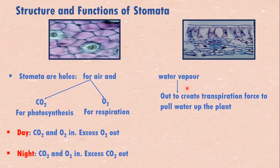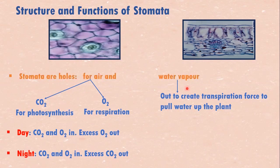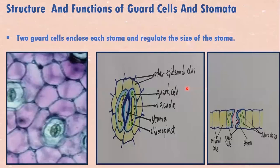The stomata are very important to be open for these processes to go on. The structures that open the stomata are the guard cells. This is the lower epidermis — this is the stoma. These two cells surrounding the stoma are called guard cells. This is one guard cell, this is another guard cell, and in the middle is the stoma.